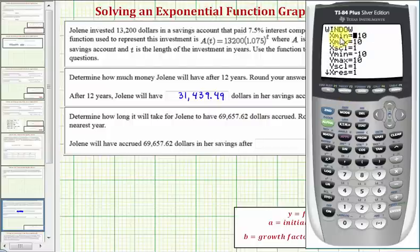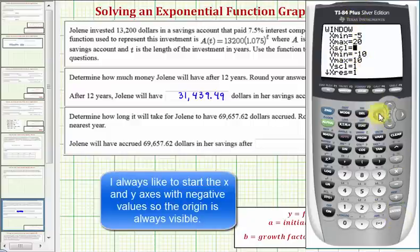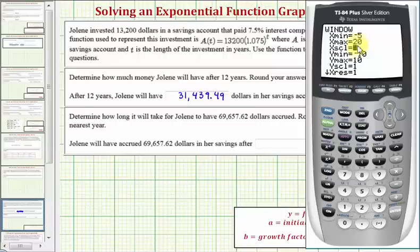And now we'll adjust the horizontal and vertical axes. Remember the horizontal axis represents the number of years. Let's go ahead and start at negative five, and let's go out to 20. Again, we're just making an educated guess here. Let's set the x scale to five. That's how often we'll have a tick mark.